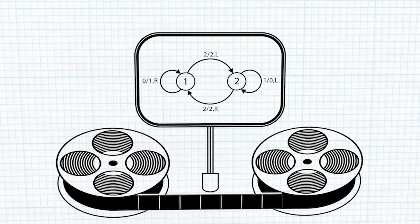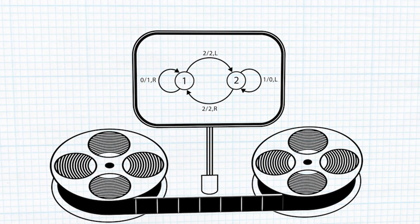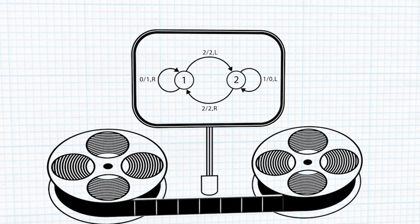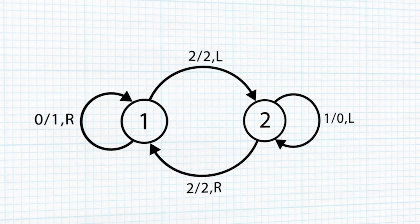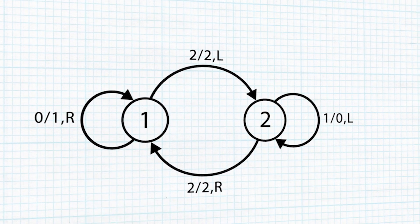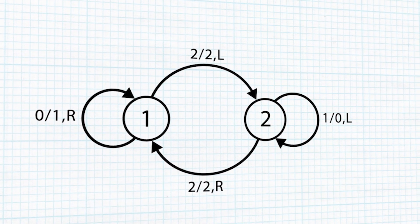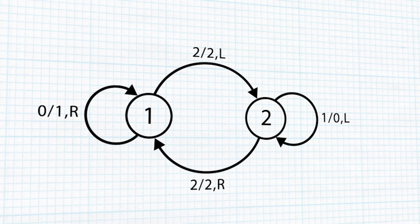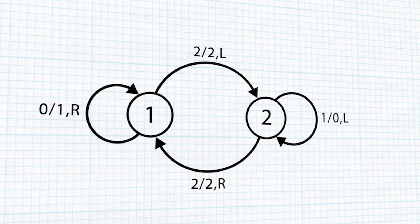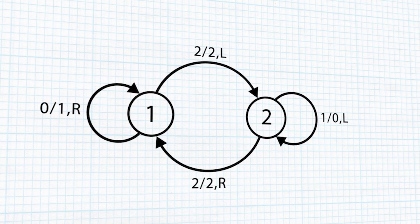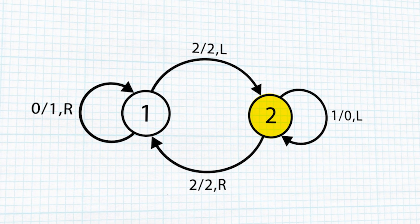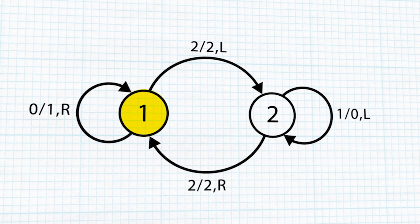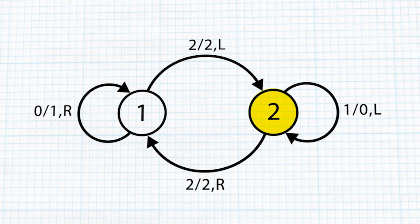His programming language is based on the machine having specific modes or states it can be in. Here is a Turing machine diagram for that ZigZag program I was playing at the very start. The program has two states, numbered one and two. The machine can only be in state one or state two — just one state at a time.